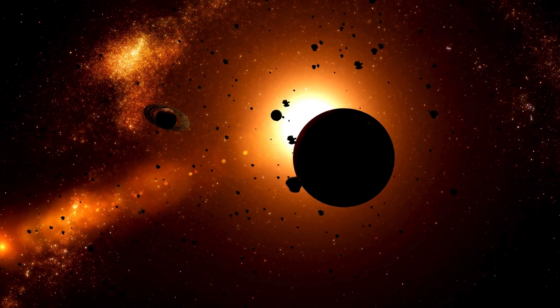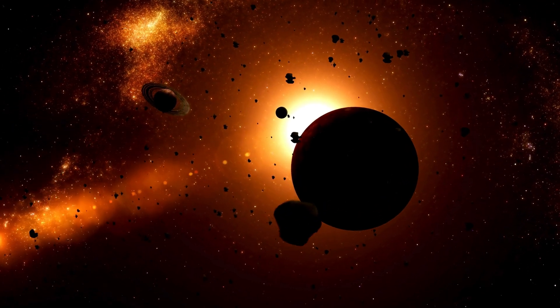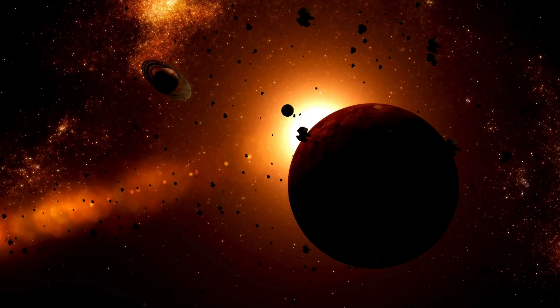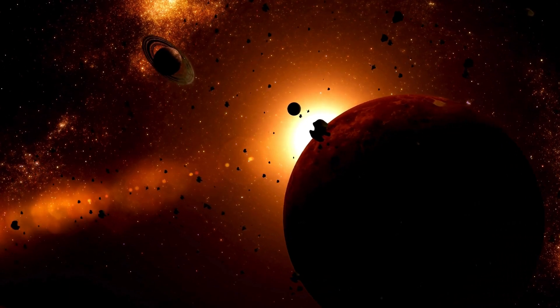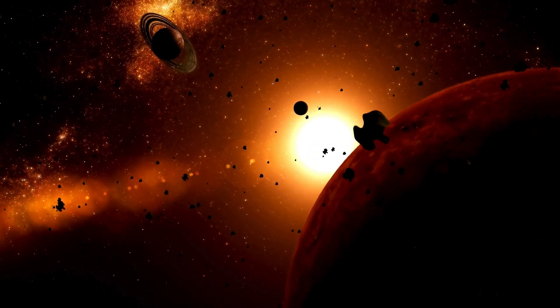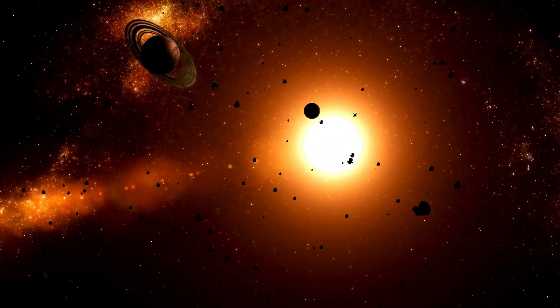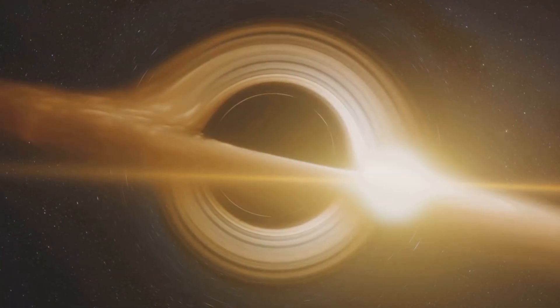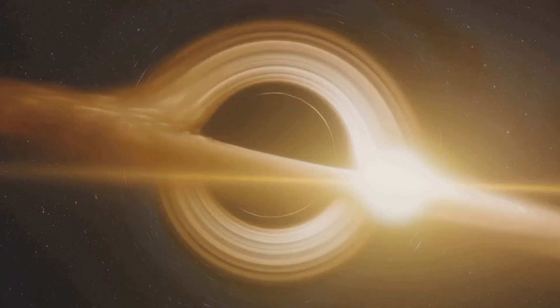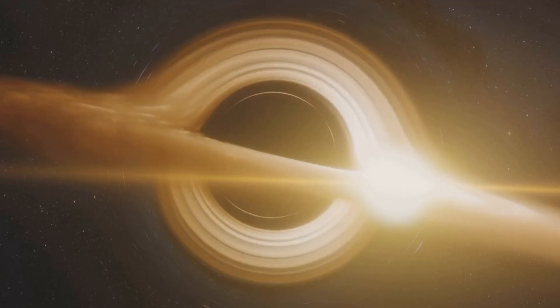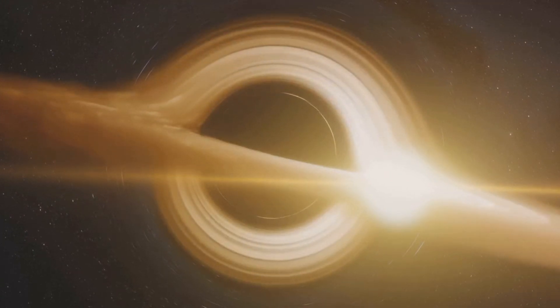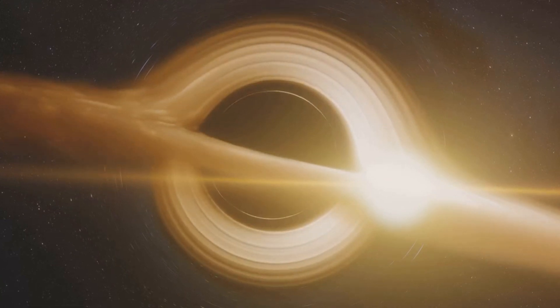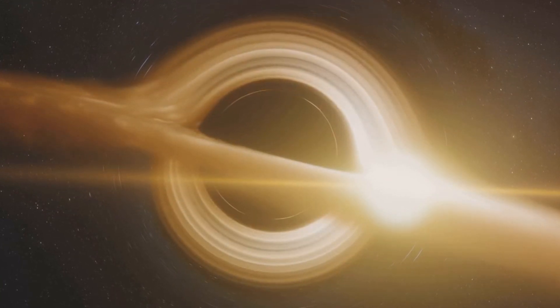Now, where's the nearest black hole, you ask? It goes by the name V616 Monocerotis, also fondly known as A0620-00. This cosmic giant is located a staggering 3,000 light-years away. To put that into perspective, one light-year is about 6 trillion miles. So our closest black hole neighbor is roughly 18,000 trillion miles away. Quite a distance, wouldn't you say?